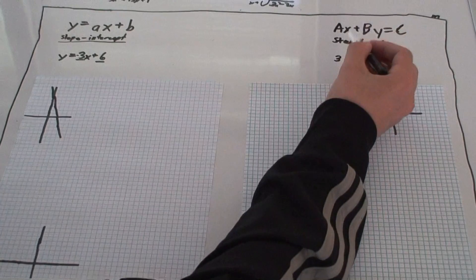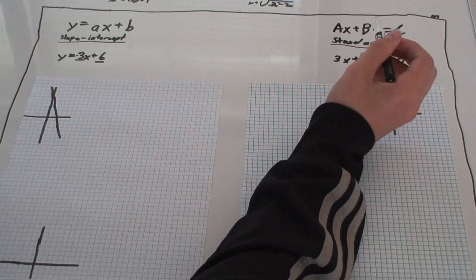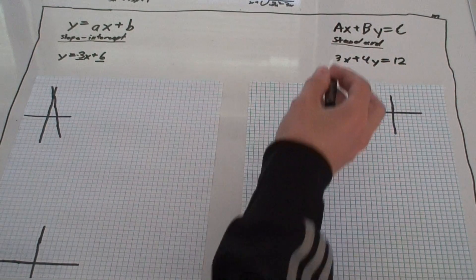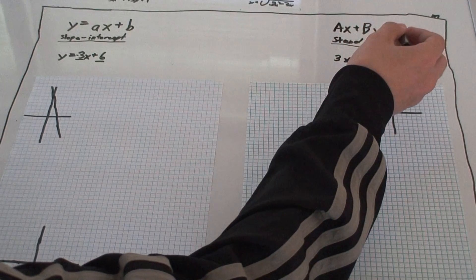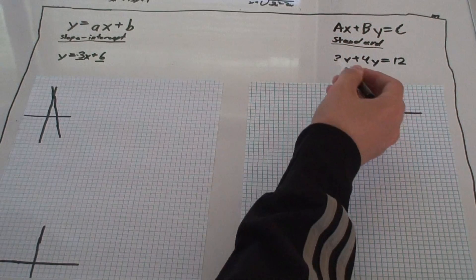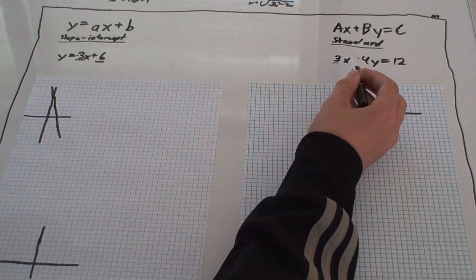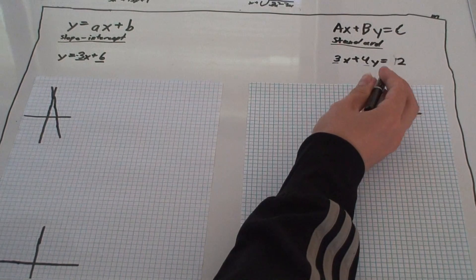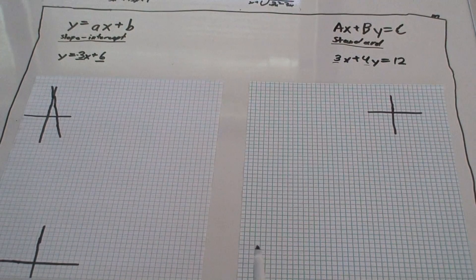Over here is what's known as a standard form. You have ax plus by is c. So, you have your modifier for your x, your modifier for your y, and then your constant, which is 12.